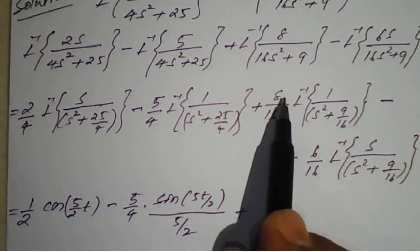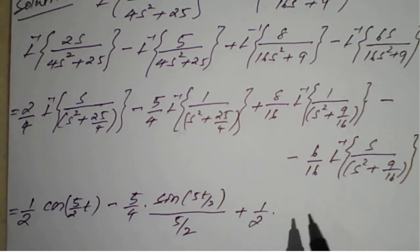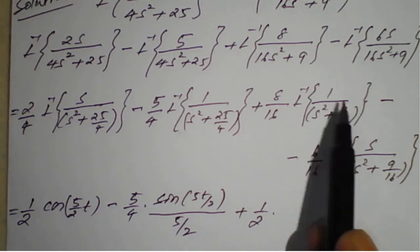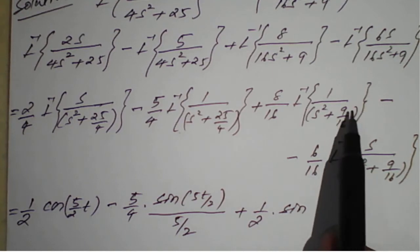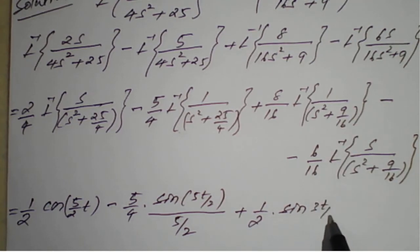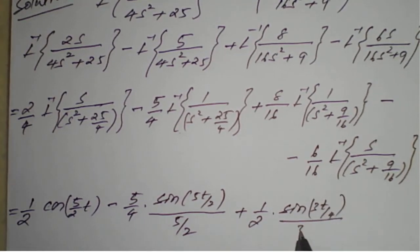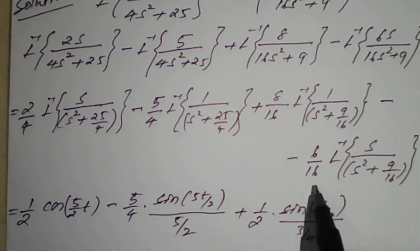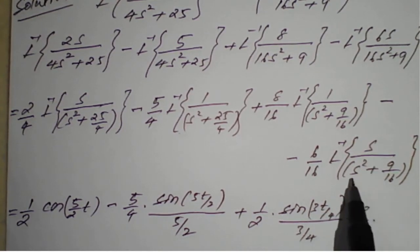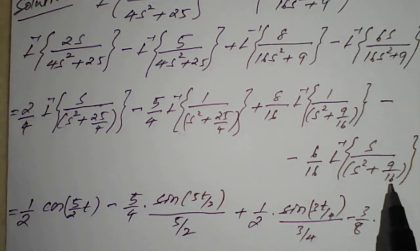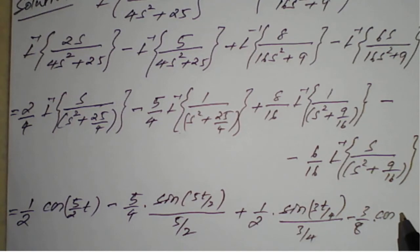For the third term: 8/16 = 1/2. Numerator is 1, so we use the sine formula. Here a² = 9/16, so a = 3/4. Result: (1/2)·sin(3t/4)/(3/4). For the last term: coefficient is 6/16 = 3/8. Numerator has s, so we use the cosine formula with a = 3/4. Result: (3/8)·cos(3t/4).